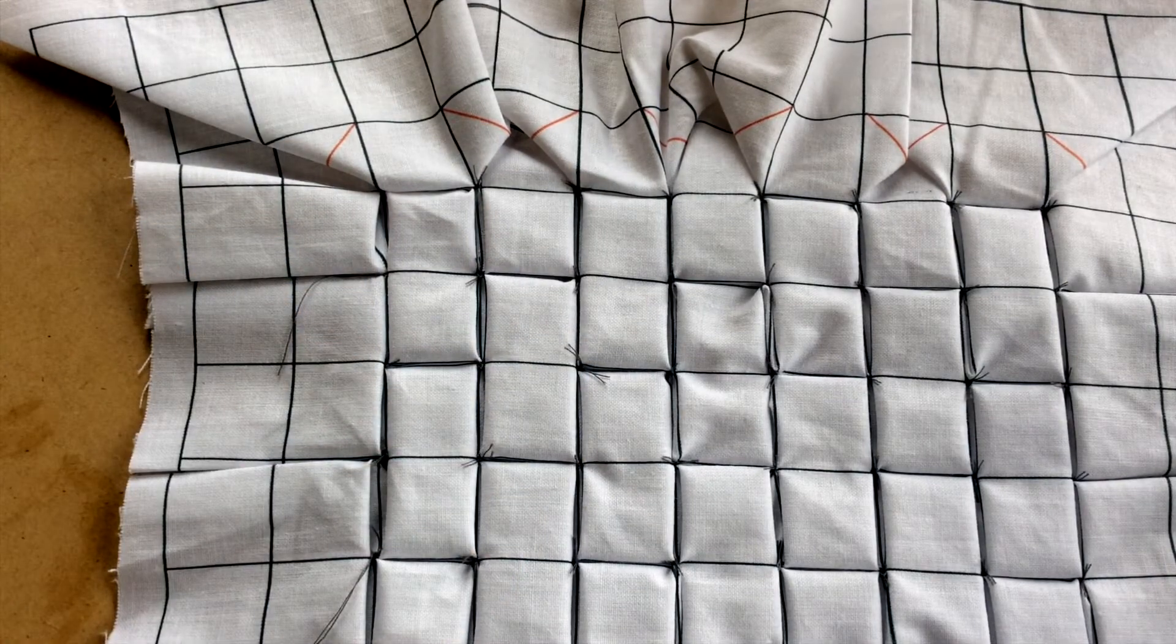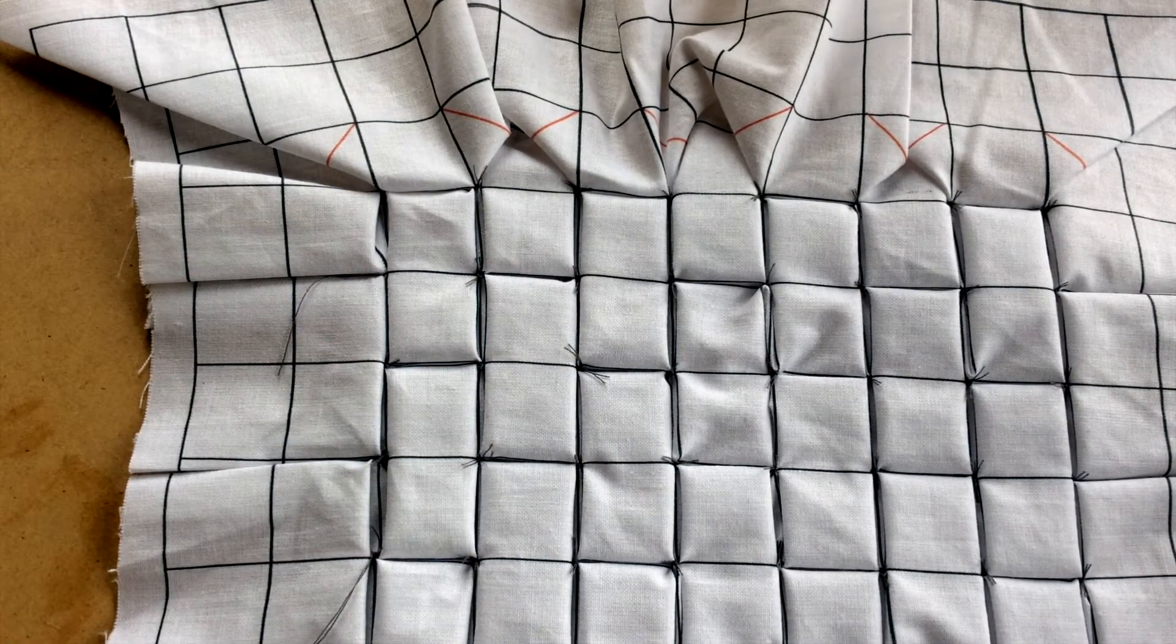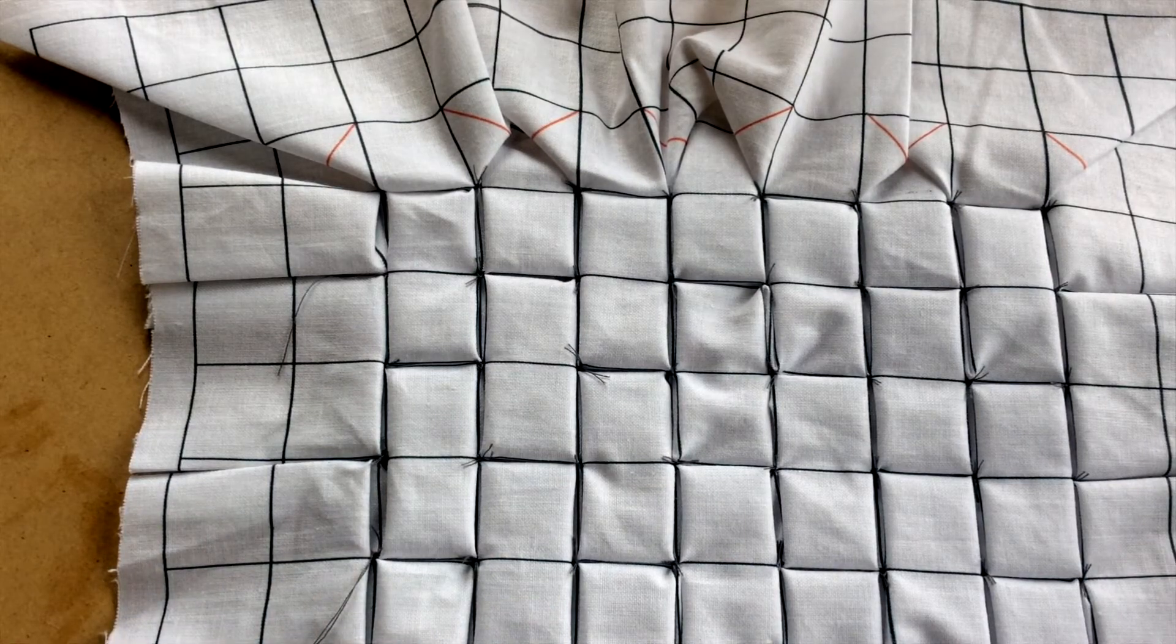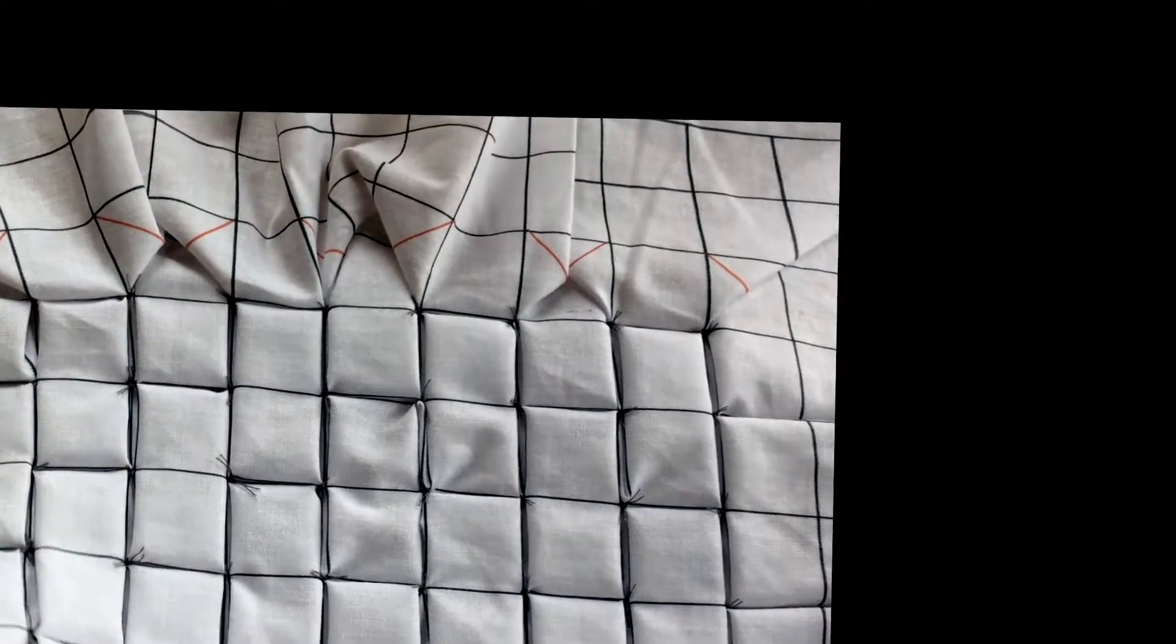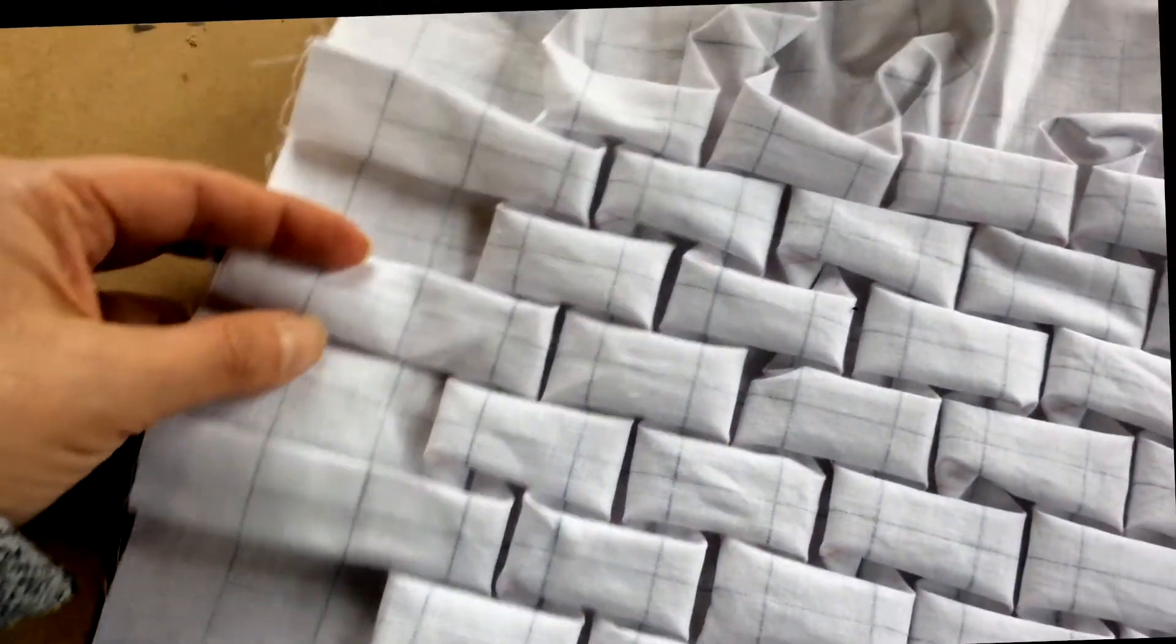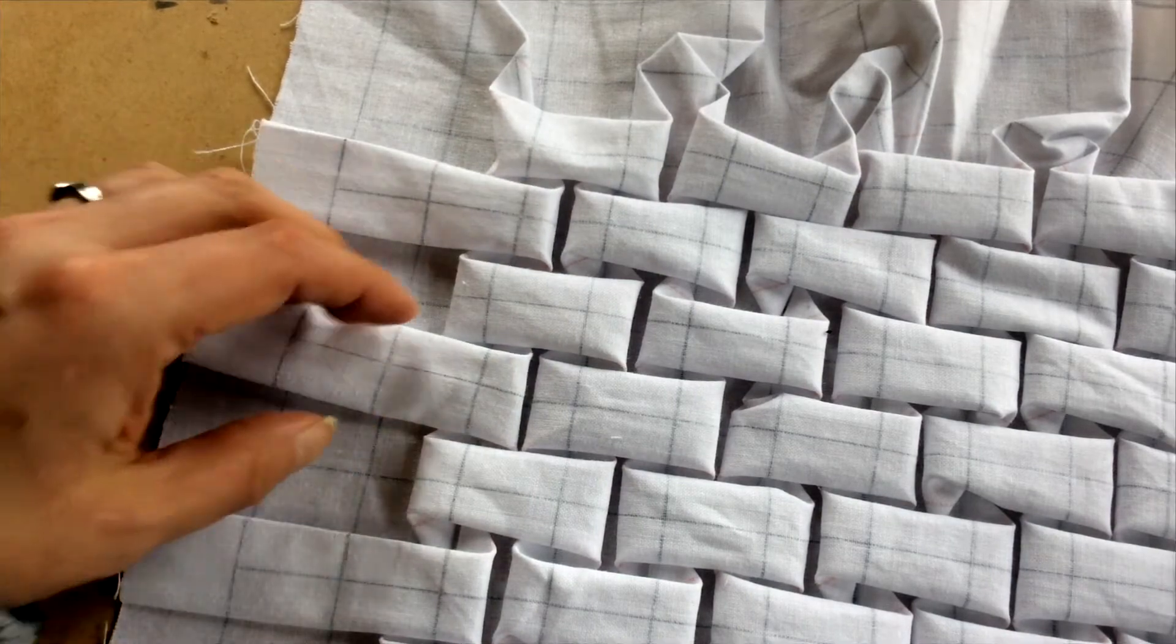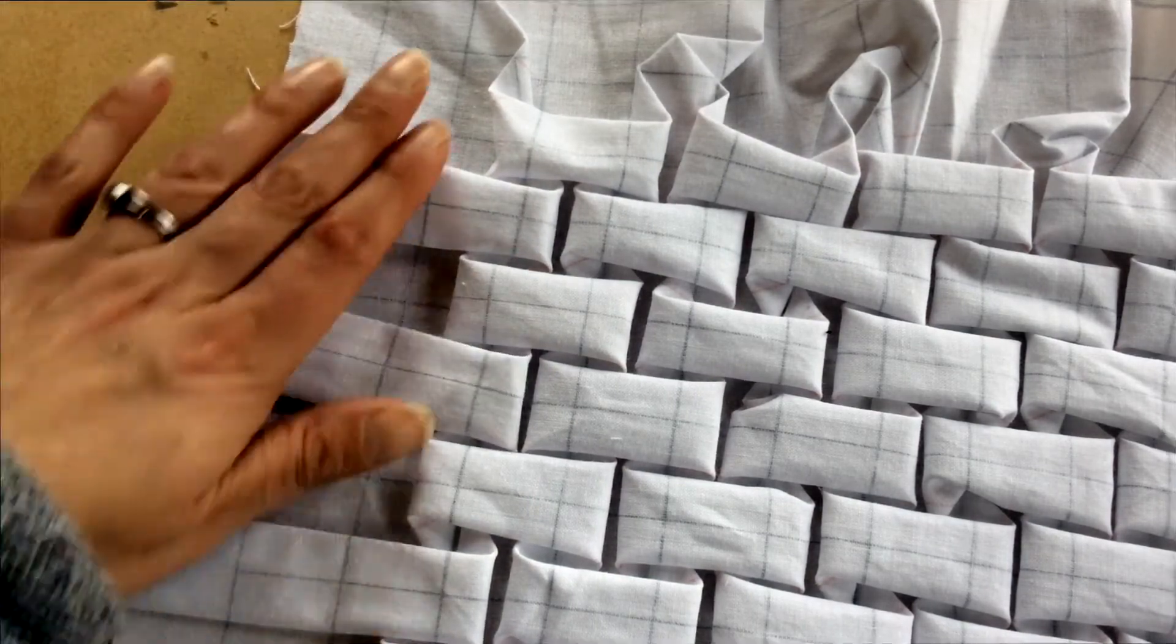The final thing we need to have a look at for finishing a smocked piece is actually the edges, because obviously you're going to put this into something else. This side you'll see is a fairly easy one to deal with because you're effectively making a box pleat.